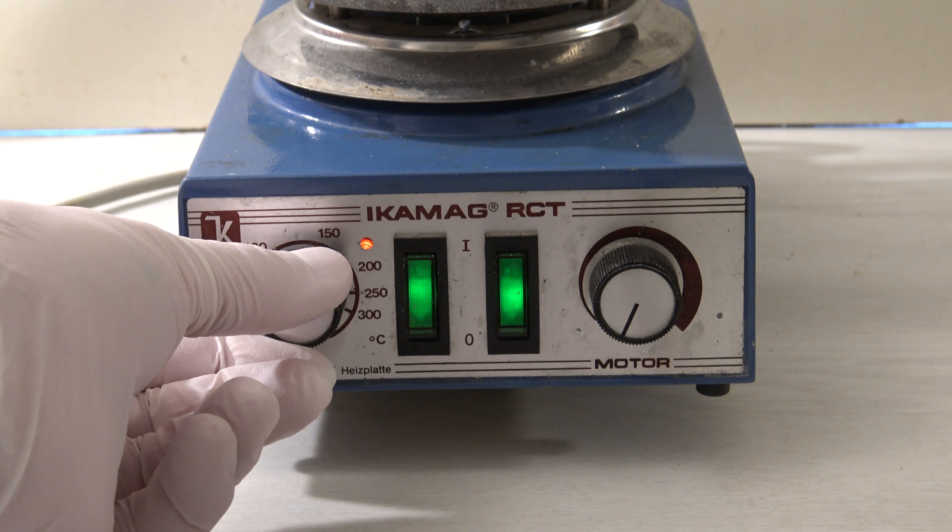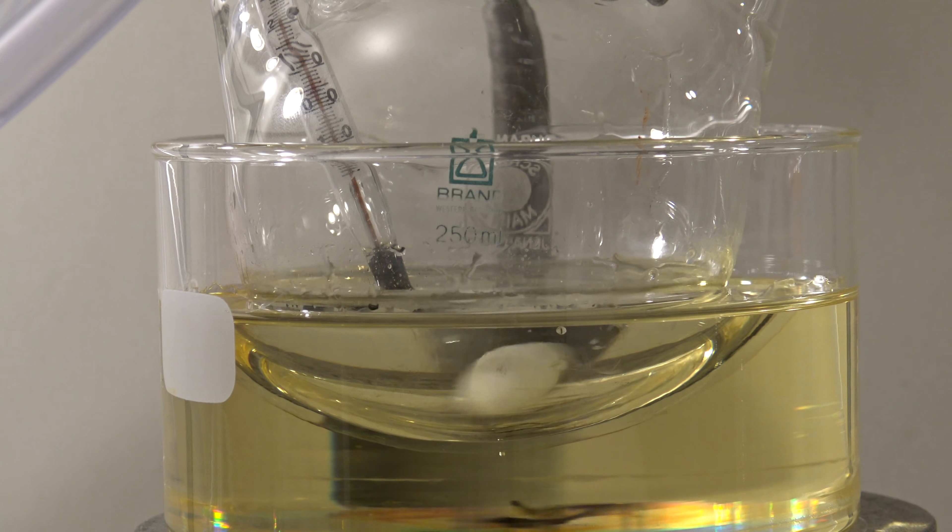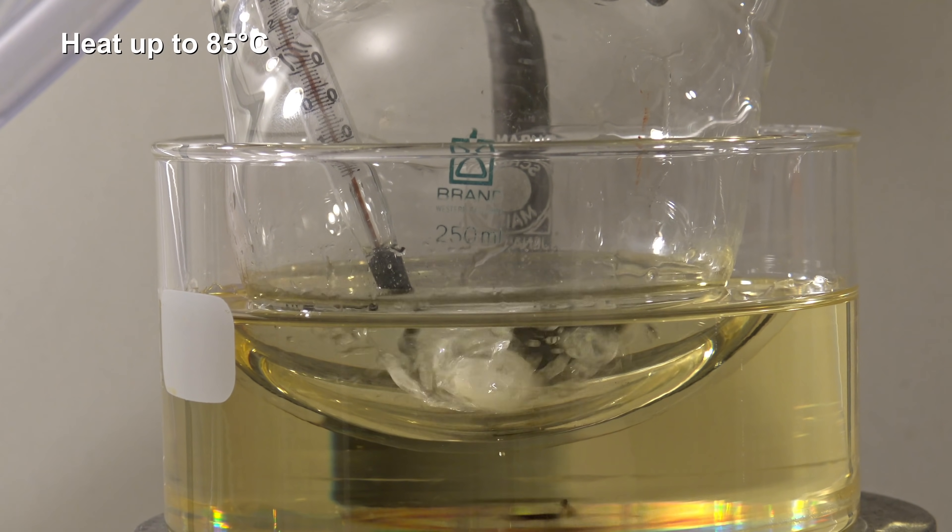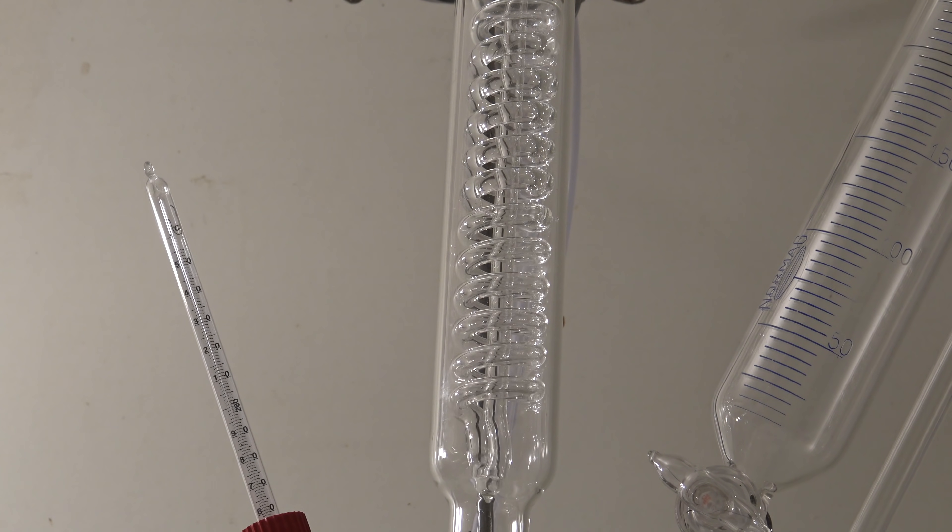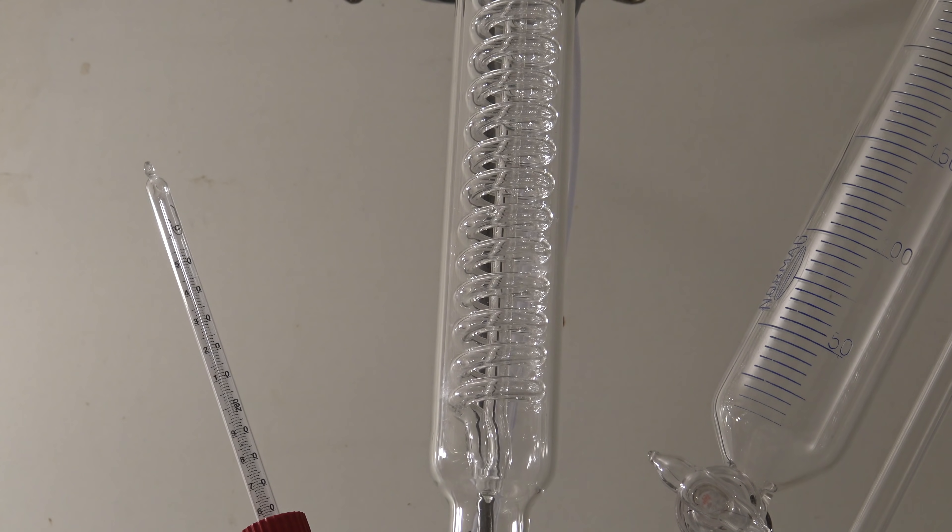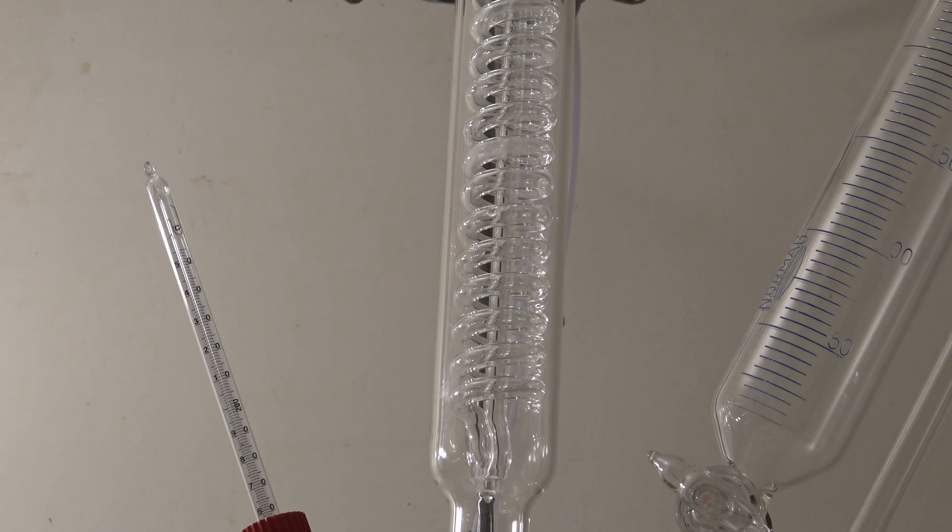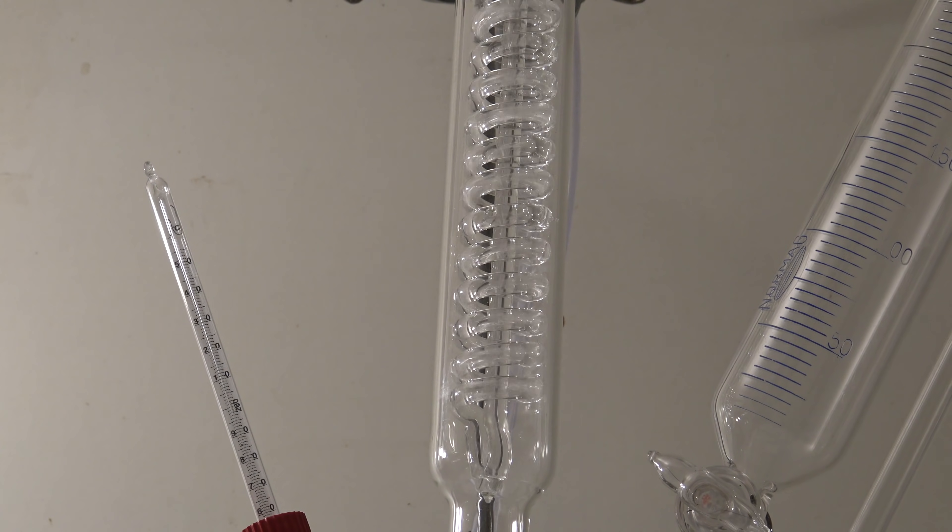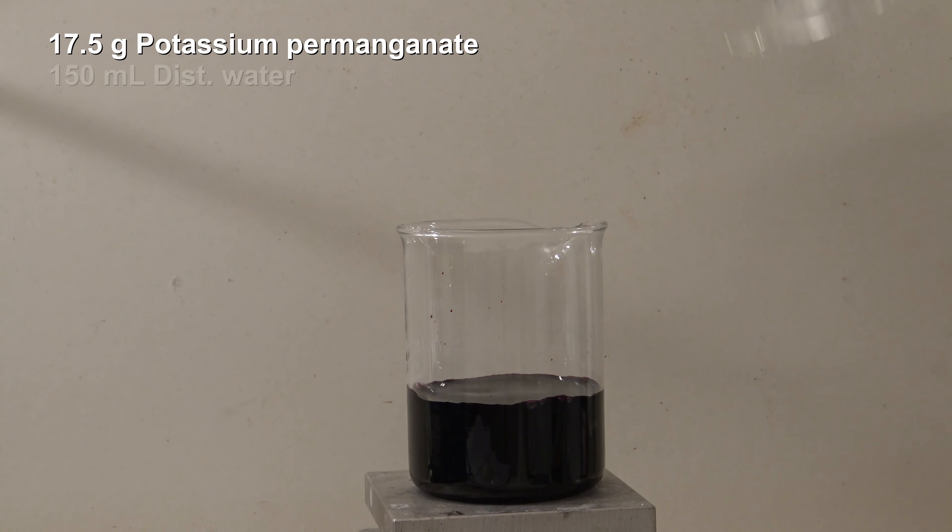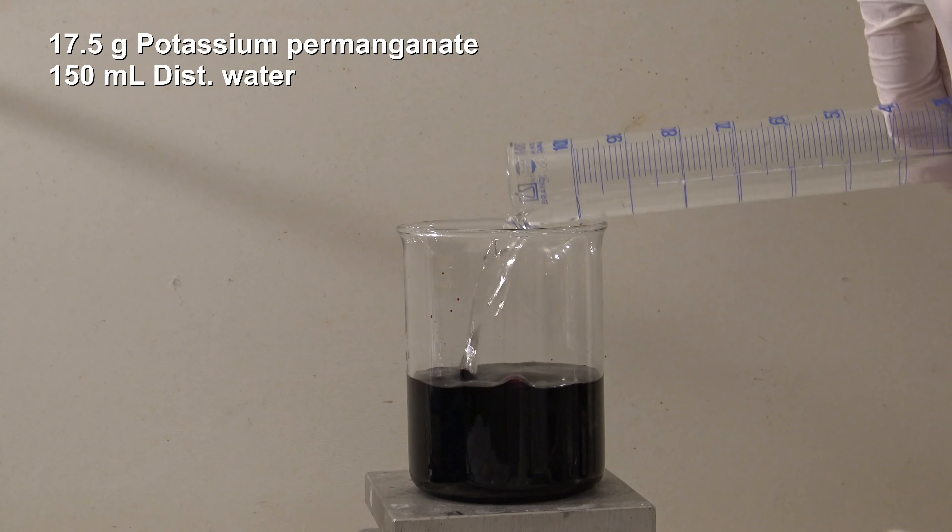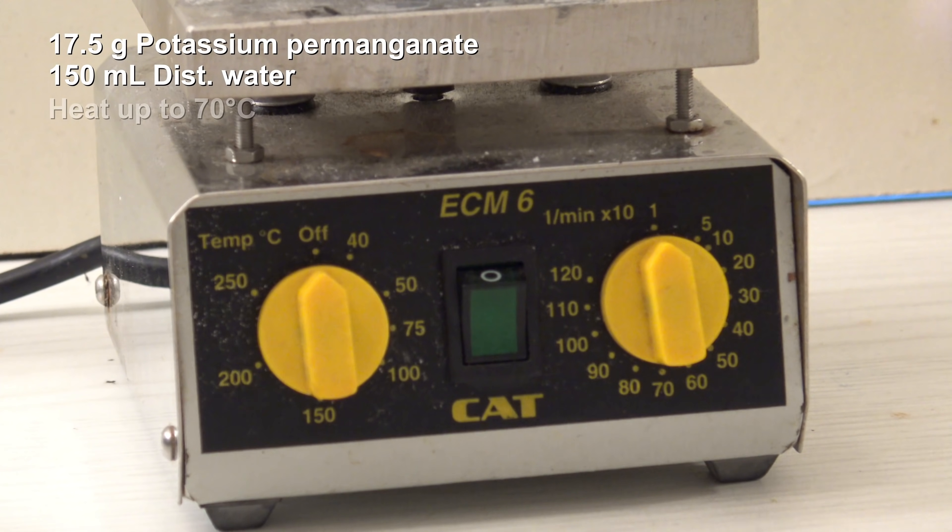The mixture in the flask was then heated to 85 degrees Celsius. In the meantime, 17.5 grams of potassium permanganate were dissolved in 150 milliliters of distilled water and heated up to 70 degrees Celsius.